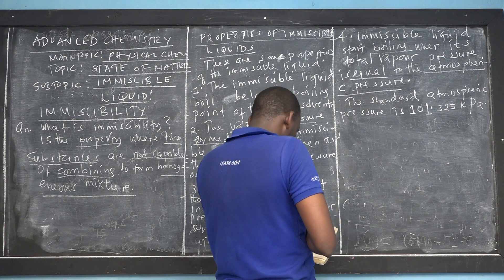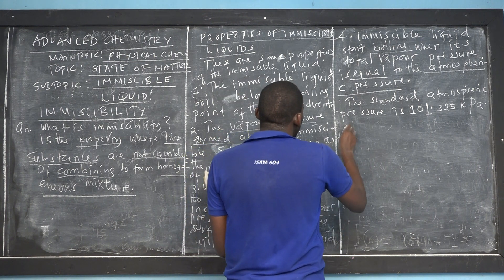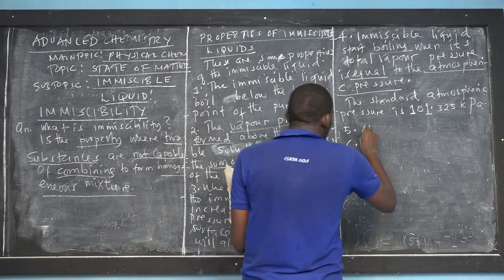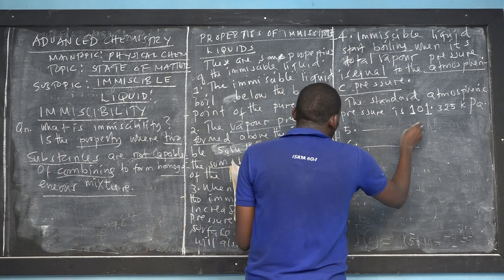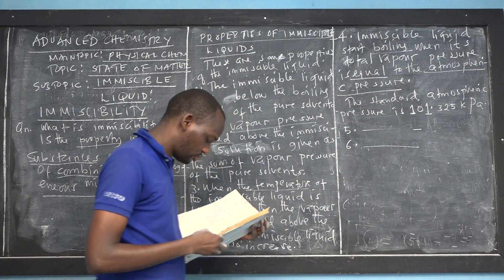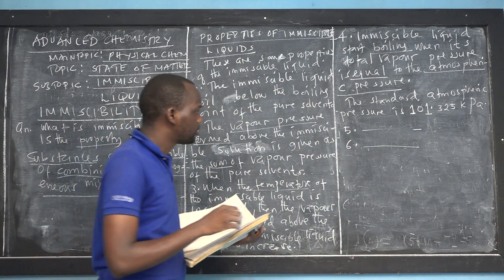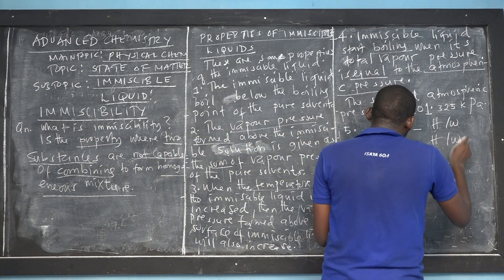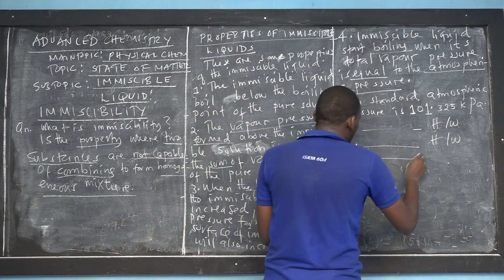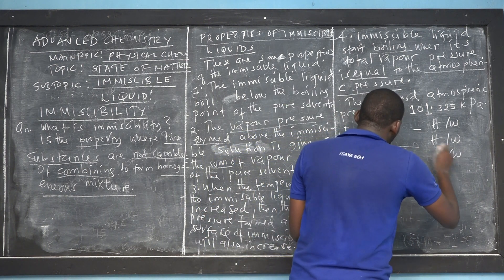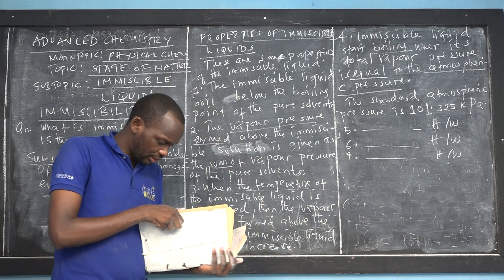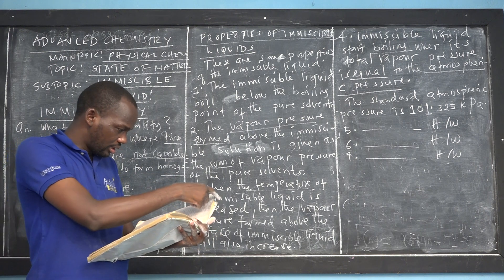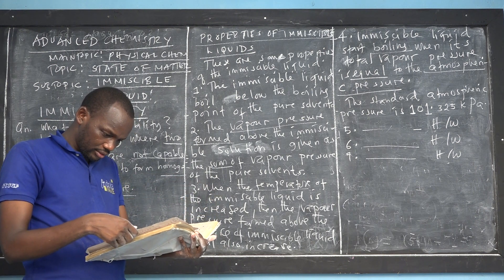So your homework is to find the properties of immiscible liquids — find the physical and chemical properties of immiscible liquids. You're allowed to use different textbooks, different sources, and even online materials that can assist you. Just water — I'm trying to tell you — just focus on water.